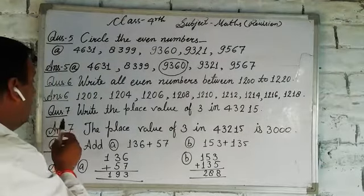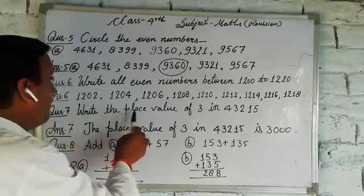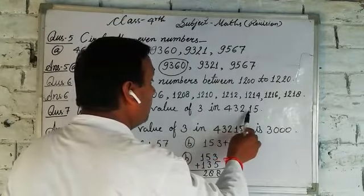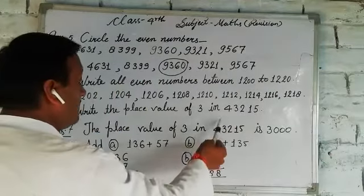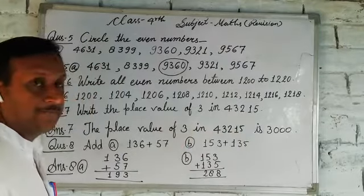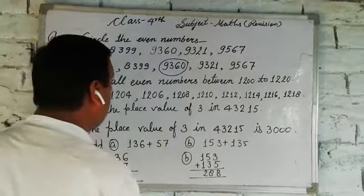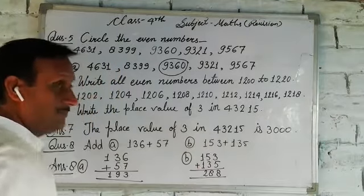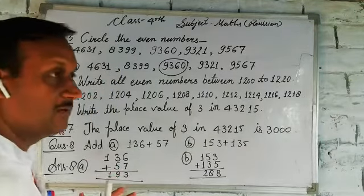Next question, Question 7: Write the place value of 3 in 43215. What is the place value of 3? How do we count the place value of 3?